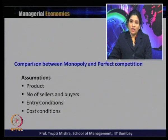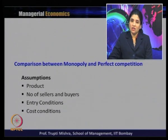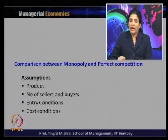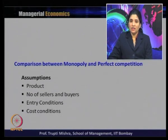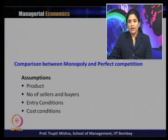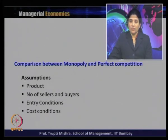Similarly, the number of sellers and buyers in the case of monopoly: the number of sellers is one and there is a large number of buyers. But in the case of perfect competitive market structure, there are large numbers of sellers and buyers. Regarding entry conditions, in perfect competition there is free entry and free exit. Whereas in monopoly there is an entry barrier, but exit is easy if you are incurring a loss.